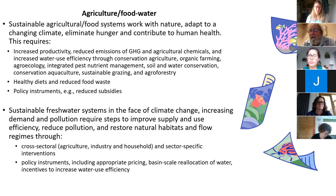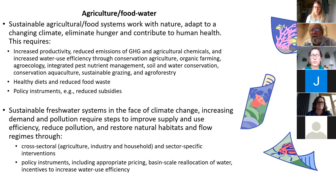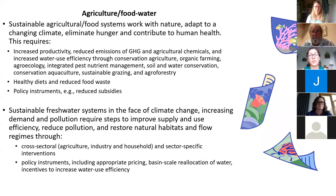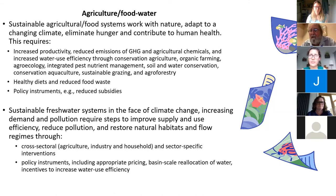We need to reduce the use of agricultural chemicals, increase water use efficiency, pursue organic farming and agroecology, and implement integrated pest and nutrient management, and soil and water conservation. We need healthy diets, reduced food waste, and reduced agricultural subsidies. For freshwater systems, we need cross-sectoral management considering agriculture, industry, and household uses together, with appropriate water policies including appropriate pricing. Financial organizations should stop lending for fossil fuels and develop new financial instruments for conservation of biodiversity and sustainable agriculture.